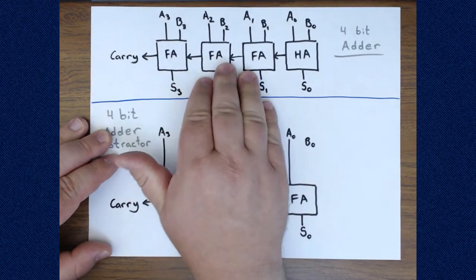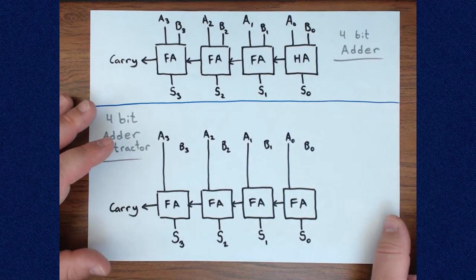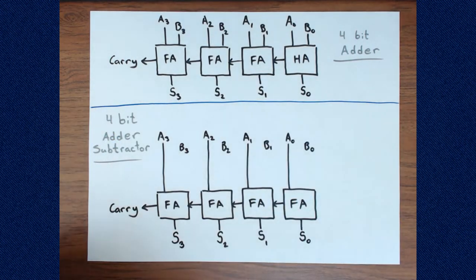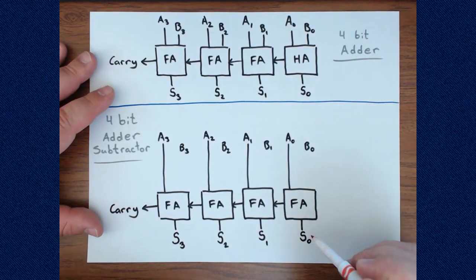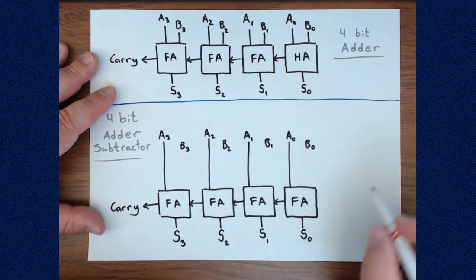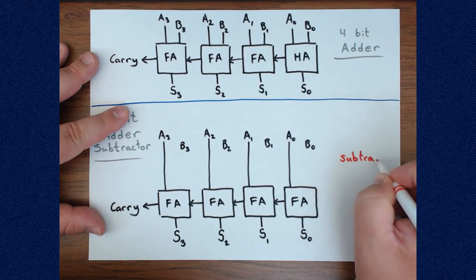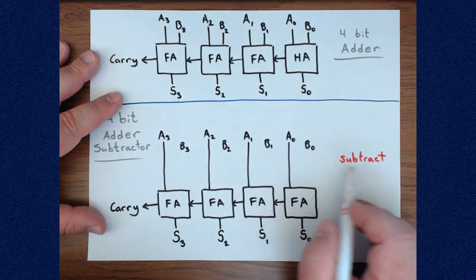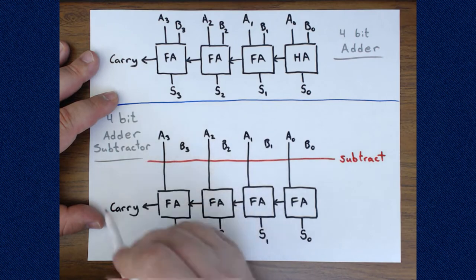We don't want a separate adder circuit and a separate subtractor circuit because they are basically the same kind of thing. Since we won't be adding and subtracting simultaneously — we choose one operation based on the next instruction — we can converge them into a single circuit controlled by a control line. We'll add a subtract control line. When subtracting, this line is a one; when adding, it's a zero.